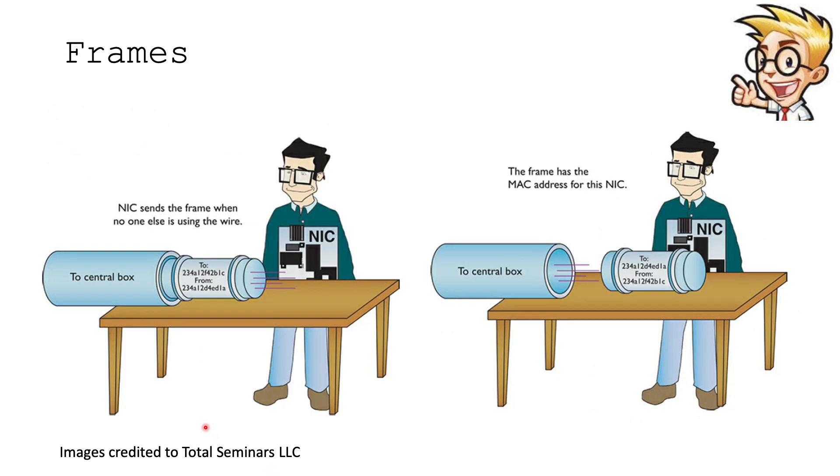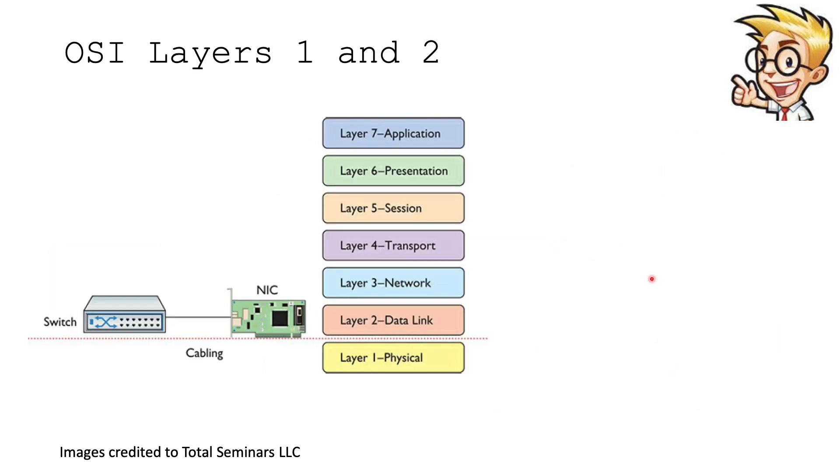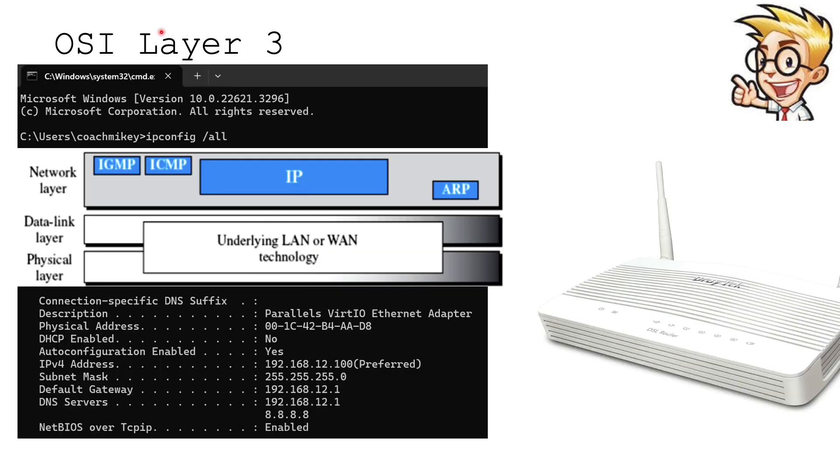We can see in this picture: receiving the data, we're encapsulating it like a capsule. From the NIC, it's going outside to a switch, or it says here, central box. The NIC sends the frame when no one else is using the wire, and the frame has the MAC address for this NIC. So it knows where to go.